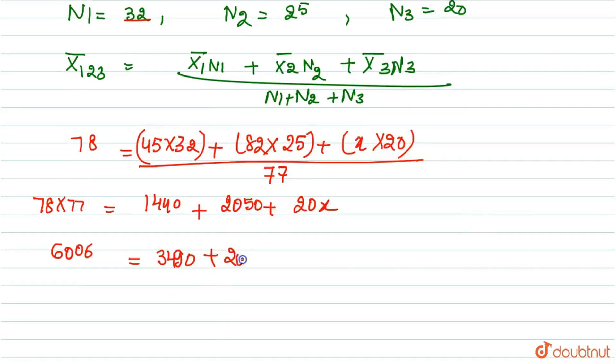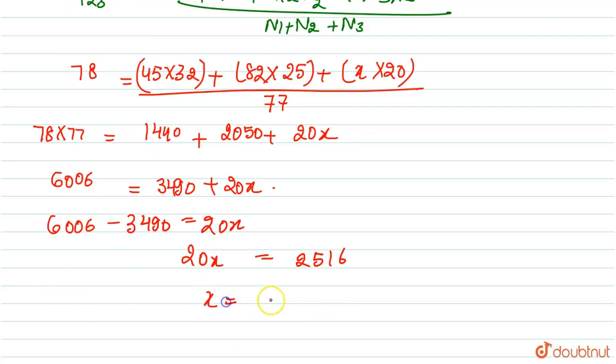Plus 20x. So we will solve for x. This will be 6006 minus 3490. So what is it? Let's see, 6006 minus 3490 equals 2516. So 20x equals 2516. From here, x equals 2516 divided by 20, which is 125.8.